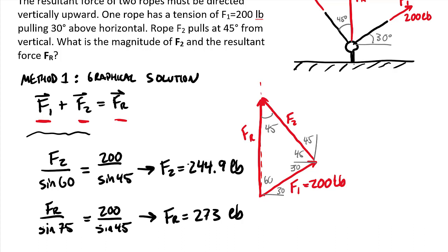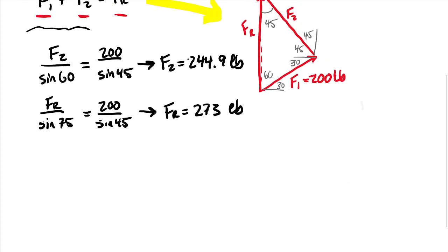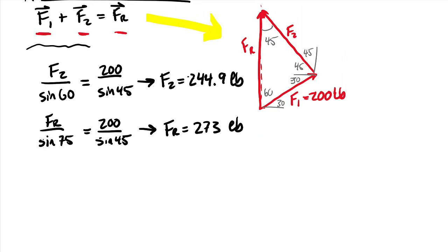That's our graphical solution: creating a triangle which interprets the equation into a figure. The other way we'll solve this problem is to use the same basic equation, F1 plus F2 equals Fr, with all being vectors, and change them into vector components. Let's move to method 2, vector algebra.